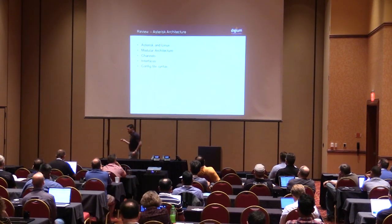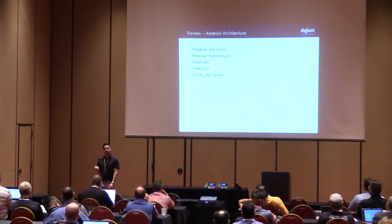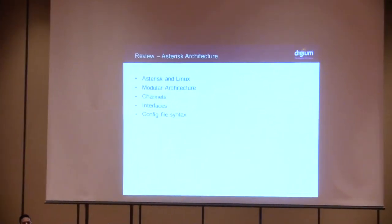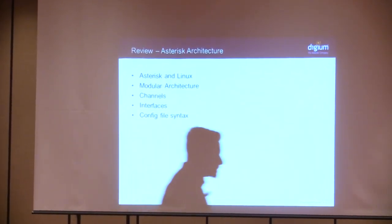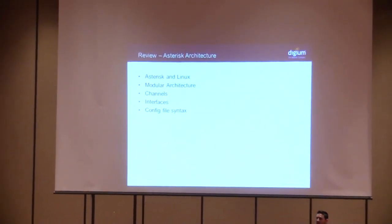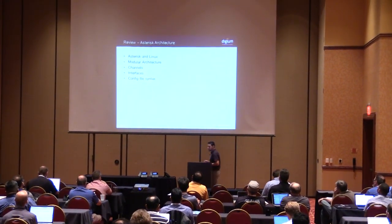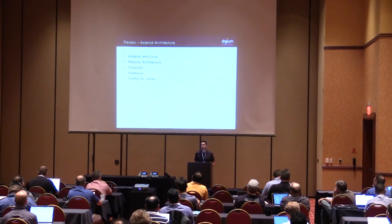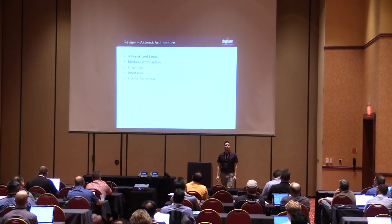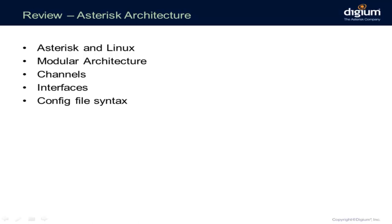Review: the default directory for Asterisk modules is /usr/lib/asterisk/modules. Asterisk has a core that handles just a few functionalities, and every module adds an application. To select which modules to load or not, you use modules.conf, or from the CLI you can do 'module unload' or 'module load app_playback.' A channel is a pathway in and out of Asterisk — a connection where you can send or receive media.